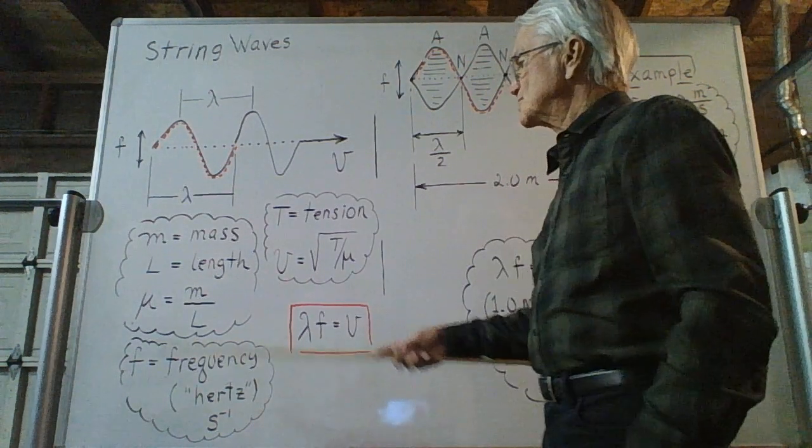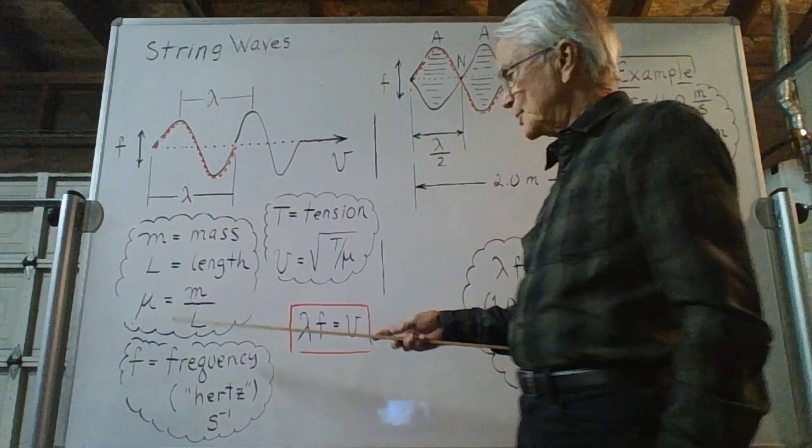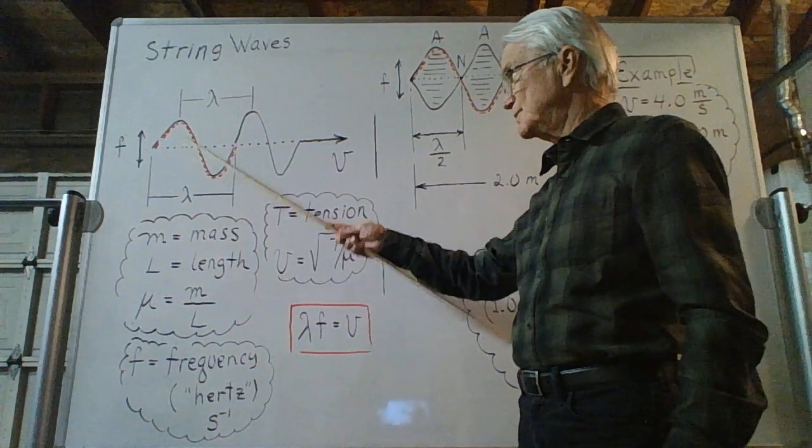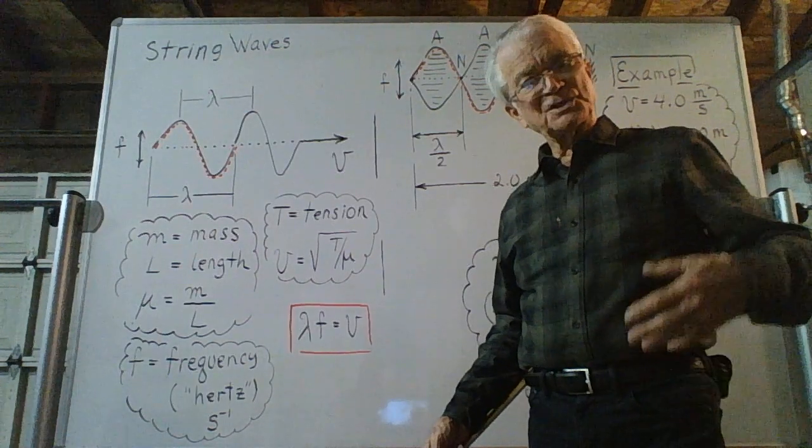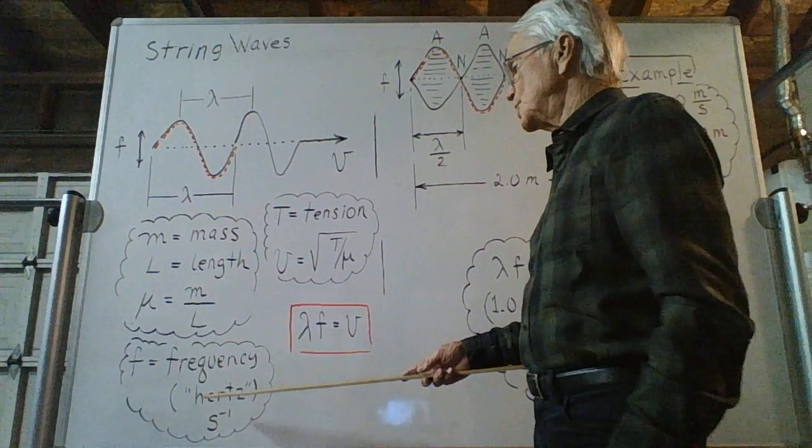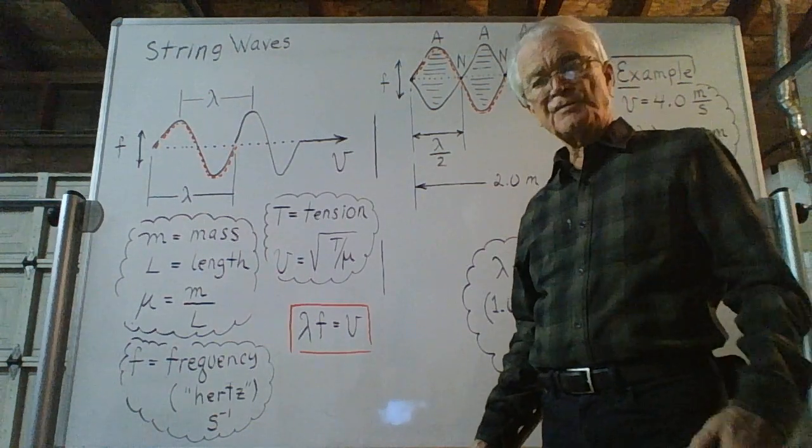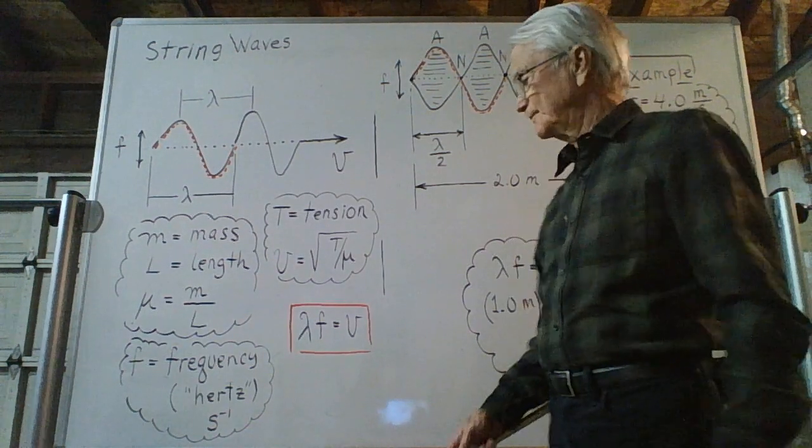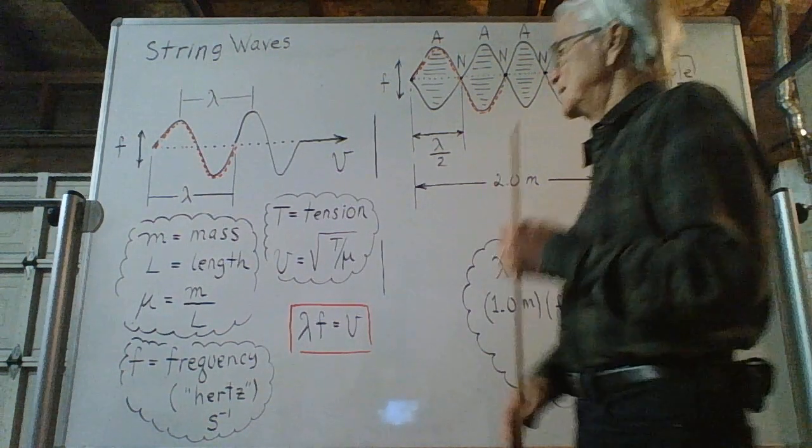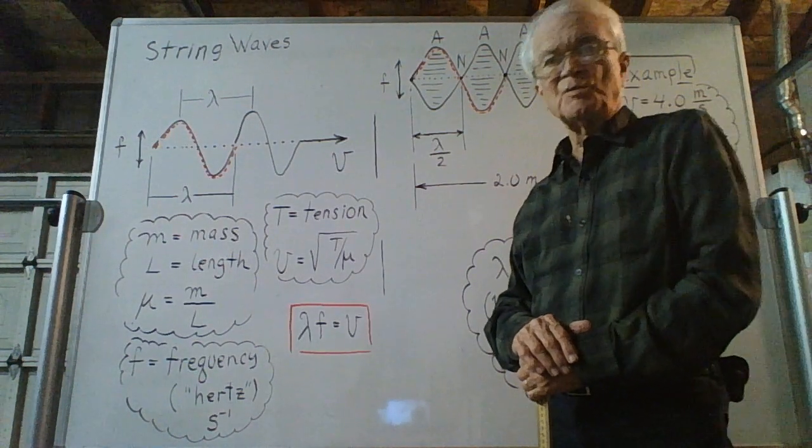So the linear mass density is m divided by L. We earlier encountered f, the symbol for the frequency of oscillation of this string, which is the same as what we call the frequency of the wave, measured in hertz. A hertz is equivalent to a reciprocal second, s to the negative one power. Another important property of the string that determines how it will behave is the tension in the string, symbolized as T.